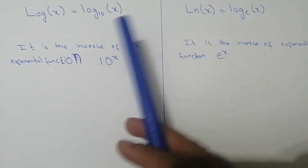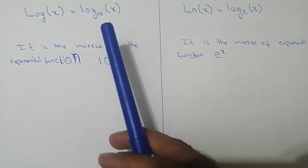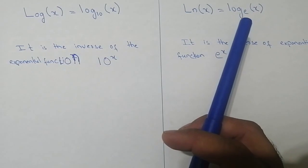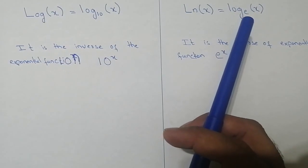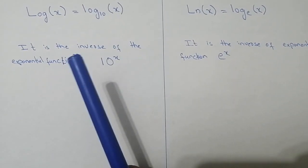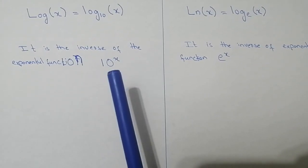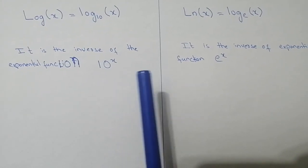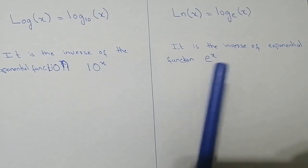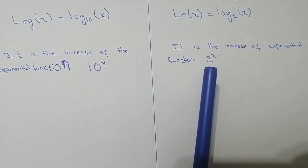The only difference here is that the common base is 10 for log and the common base is e for ln. So log is the inverse of the exponential function 10^x, and ln is the inverse of the exponential function e^x.